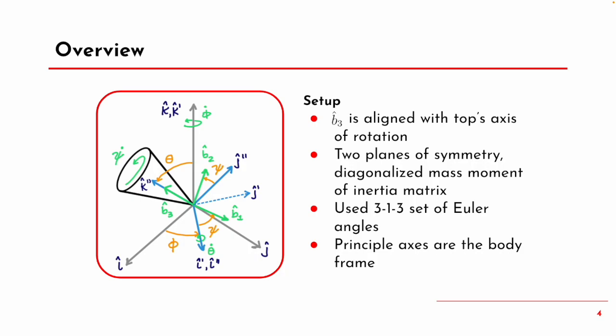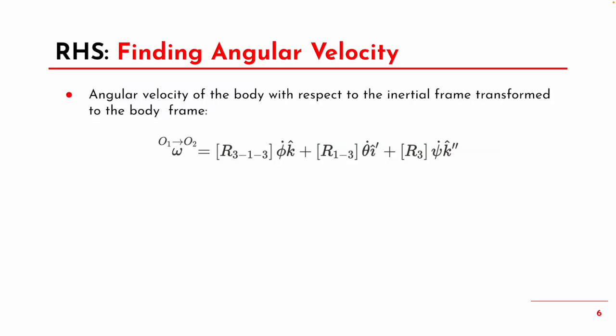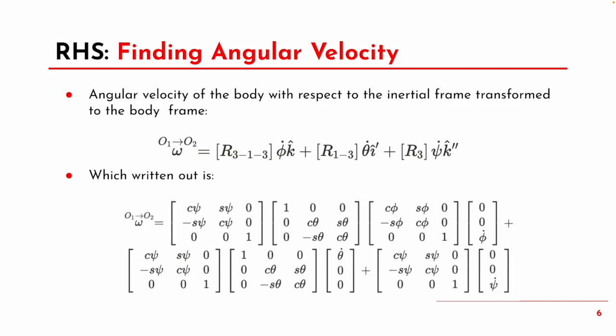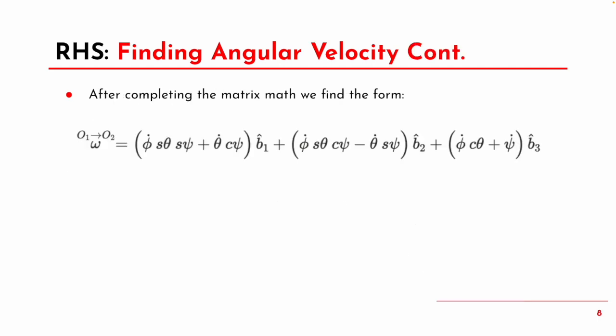Since there are two planes of symmetry, there is a diagonalized mass moment of inertia matrix. For the rotations, we used a 3-1-3 set of Euler angles. Starting with the right-hand side of our Euler equations, we can find the angular velocity of the top with respect to the inertial frame and then transform it to the body frame using our Euler angle rotation matrices. Evaluating the matrix math, we find the angular velocity in the body frame.